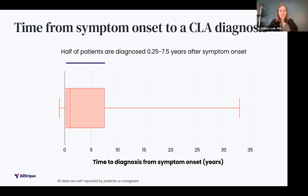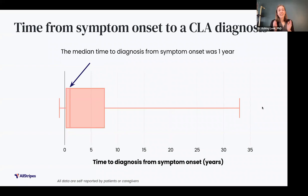If we look at the box on this graph, we can see that the middle 50% of patients in the cohort were diagnosed between three months and seven and a half years after symptom onset. The line in the middle of that box represents the median — this is the halfway point for all of the patients. So the median time from symptom onset to diagnosis was one year, meaning that half of patients were diagnosed less than a year after symptom onset, and half of the patients were diagnosed more than one year after symptom onset.